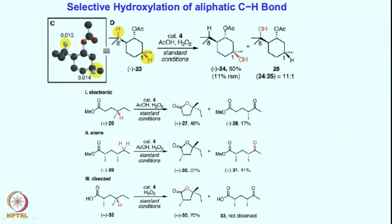In the last class we have seen these compounds where selectively we have seen that this position is not the major product, but this is the major one — the highlighted positions are where the C-H bond is getting hydroxylated. In cases where it is a secondary or primary bond we get the ketone; in cases where it is a tertiary we get the hydroxylated product.